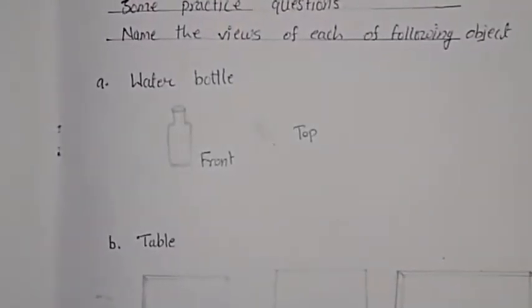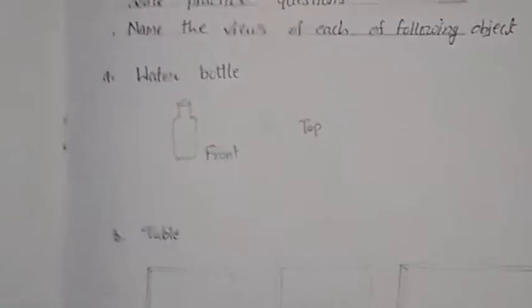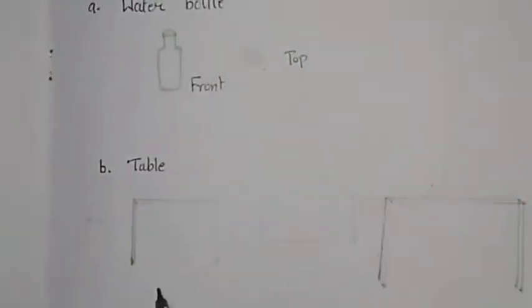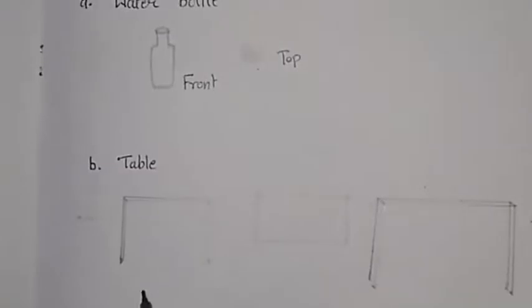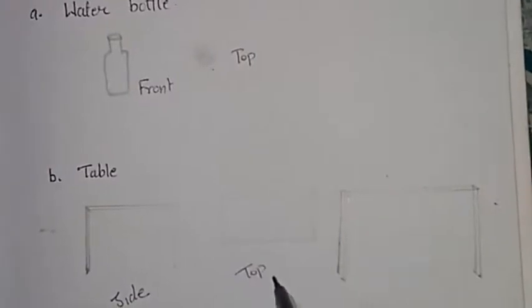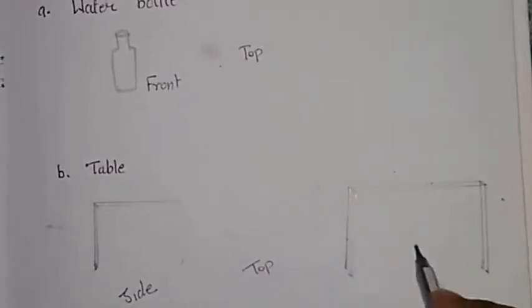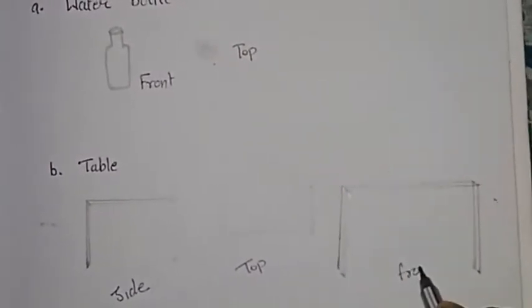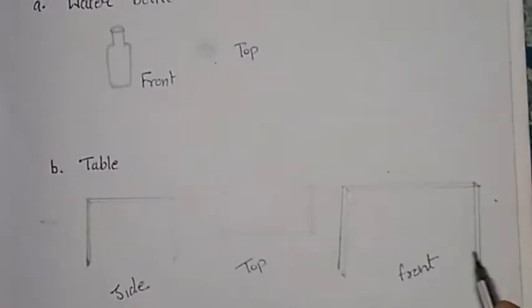Now, next example, table. If we look at table from the side, it looks like this. So, this is the side view of table. This is the top view of table. And this is the front view of table.